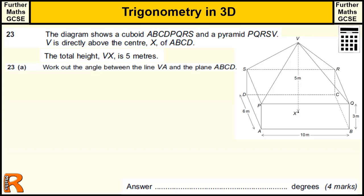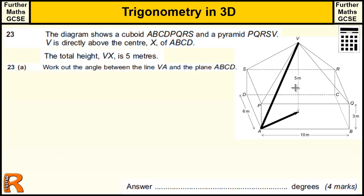So let's see how you should have done part A. We're trying to work out the angle between VA and the plane ABCD — that bottom rectangle and the line going down there. Let's draw that line in, from V to A. We want the angle between that and the plane, so we need to use the triangle that's at right angles to the plane — the vertical coming down, and then the length from A to X, and the angle there. That's the angle we're trying to find; I'm going to call it theta.